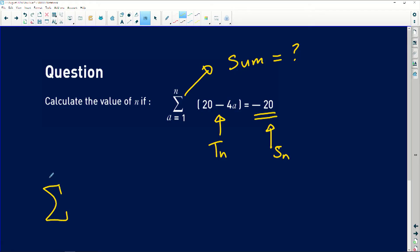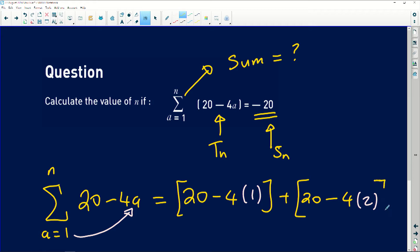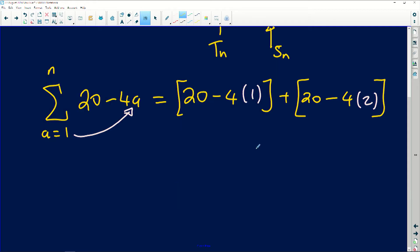So the sum of n terms from a equals 1 of 20 minus 4a is equal to: I'm simply going to keep putting a values there, substituting 1 first. So what will happen is you will have 20 minus 4 times 1, because we were told to start substituting 1. Then we'll move on to the second one and put 20 minus 4 times 2. Then you're going to continue doing this continuously, and you will have 20 minus 4 times 3, and you can do this all the way until you get to n terms.